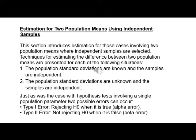Techniques for estimating the difference between two-population means are presented for each of the following situations: 1. The population standard deviations are known and the samples are independent. 2. The population standard deviations are unknown and the samples are independent.